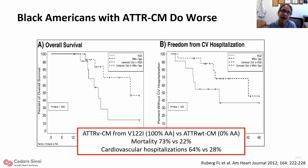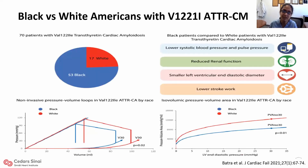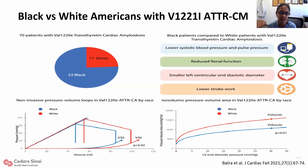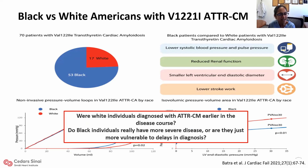You might ask: is this biology — something special about V122I — or is it truly disparity? Another study answers that by comparing Black versus white Americans with the same mutation; a group of Italian-Americans was found who also carried V122I. Even with the same mutation, Black patients showed differences: lower blood pressure, worse kidney function, smaller LV size, lower stroke work. What we don't know is whether white individuals were diagnosed earlier, whether Black individuals have more severe disease biologically, or whether they are more vulnerable to delays in diagnosis.